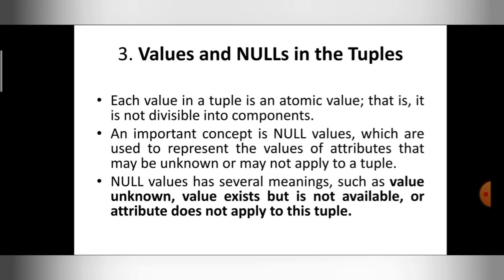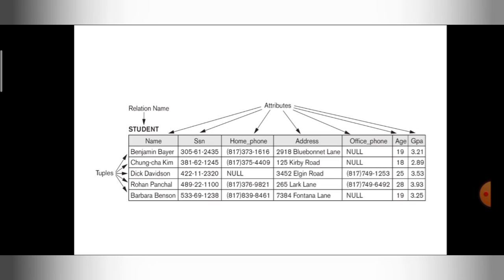If any value is null — for example, the first record Benjamin Bayer has a null office phone, and Choong Chak Kim also has a null office phone — that is because they don't have an office phone. How do we represent that empty value? We use a null value. A null value signifies an empty value — no data is present for that particular attribute.